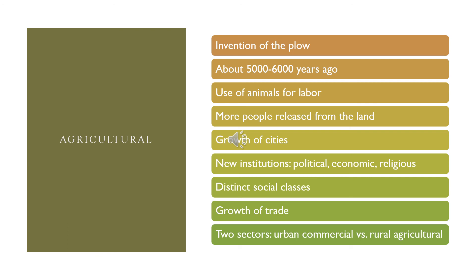Think of the feudal system — that was one of the main agricultural systems that existed within Europe. And then there was a lot of trade: trade across the seas, trade across the land — global trade. In the agricultural system, we had global trade, not just local trade.